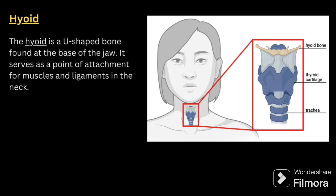Next comes the hyoid bone. The hyoid is a U-shaped bone found at the base of the jaw. It serves as a point of attachment for muscles and ligaments in the neck. You can look at the image provided to understand where the hyoid bone is located.